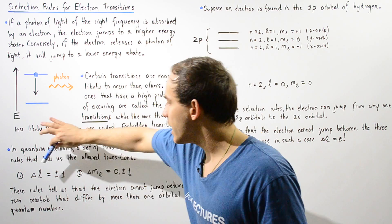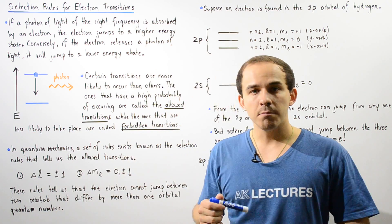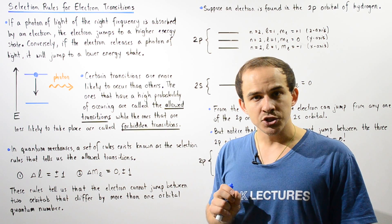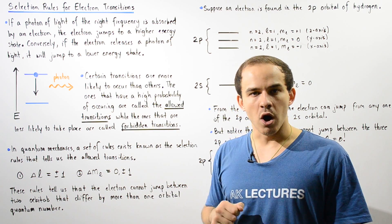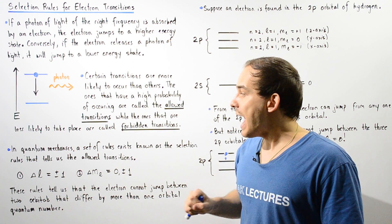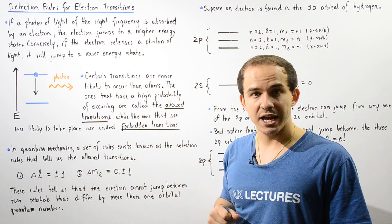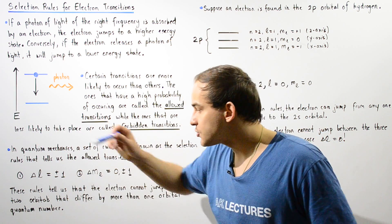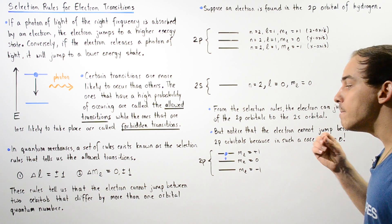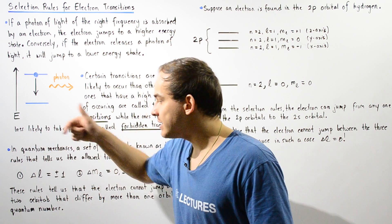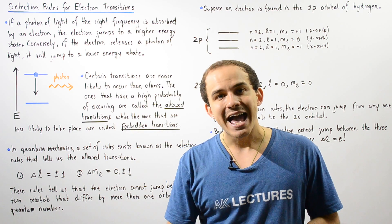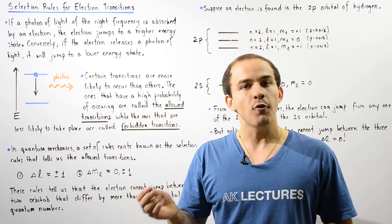These rules are given by two rules. Rule number one tells us that delta L, or the change in orbital quantum number during a transition, is either positive one or negative one. Positive one means the electron jumps from a lower to a higher energy state, and negative one means the electron jumps from a higher to a lower energy state. This rule tells us that the electron cannot jump between two orbitals that differ by more than one orbital quantum number, and the change in L cannot be equal to zero. The second rule tells us that the change in the magnetic quantum number is either zero, positive one, or negative one.